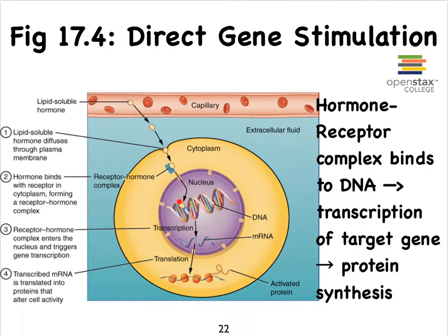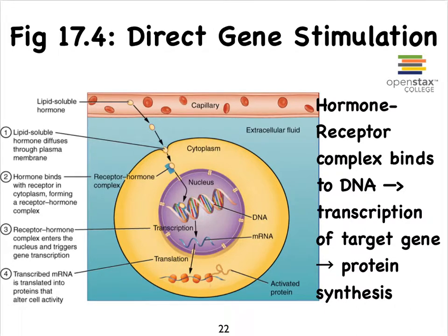Depending on where the hormone complex binds, a particular gene becomes impacted, because the binding of the complex might trigger transcription to occur. When DNA is converted into mRNA, we refer to that process as transcription. Then, once we have mRNA, combining it with ribosomes and laying down the right amino acids forms a protein during translation. These processes — transcription and translation — are part of the central dogma. By the binding of our hormone to a receptor on the inside of the cell, we ultimately trigger protein synthesis, and as long as this complex stays bound, transcription can continue to occur.